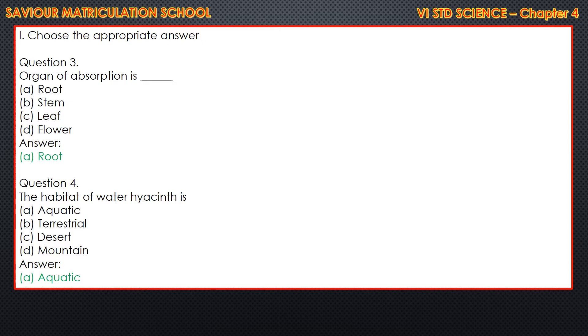Question 4: The habitat of water hyacinth is A. Aquatic, B. Terrestrial, C. Desert, D. Mountain. The answer is A. Aquatic.